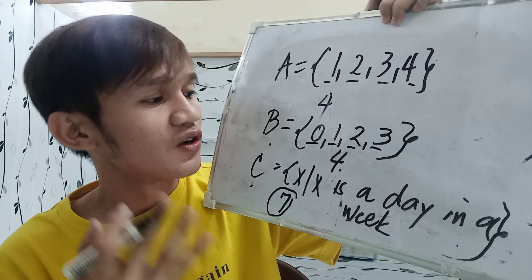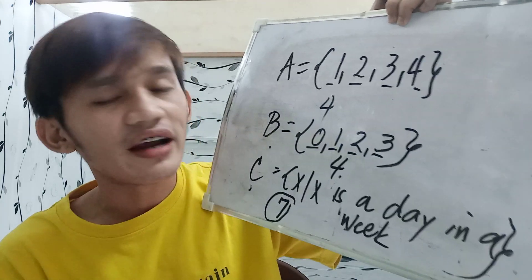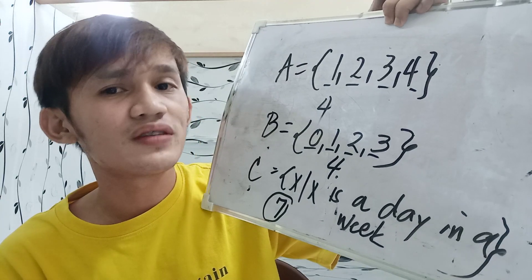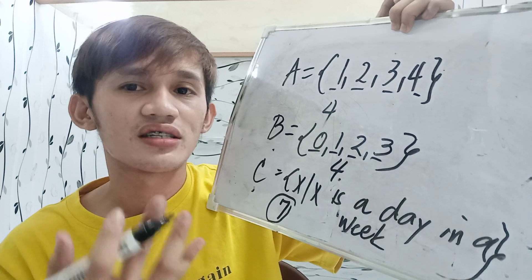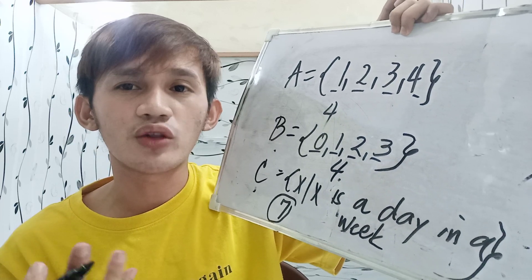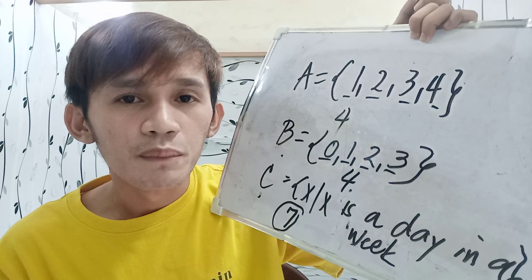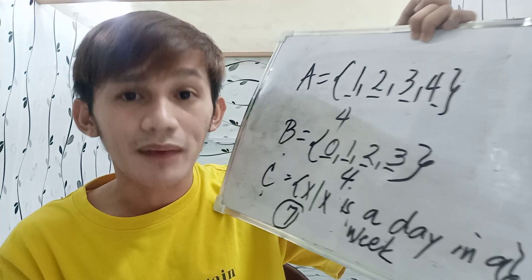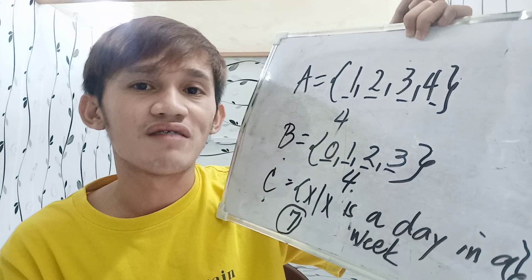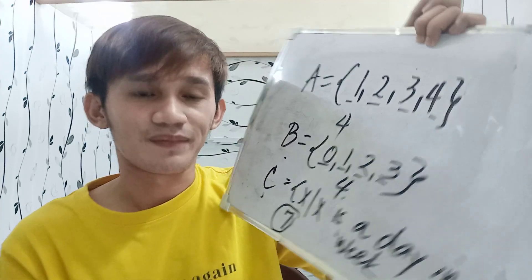As simple as that. For cardinality of a SET, you are just going to count all the elements of the given SET.